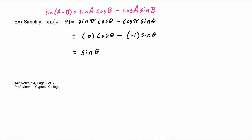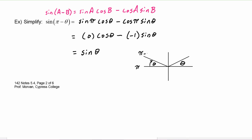If you think about this physically on the unit circle: suppose we have an angle θ. Since π is at the leftmost point of the unit circle, the angle (π minus θ) means we start at π and back up by θ. Sine is the y-value on the unit circle, and we can see that the y-value of the point at (π minus θ) is the same as the y-value at θ. So the sine of θ equals the sine of (π minus θ).